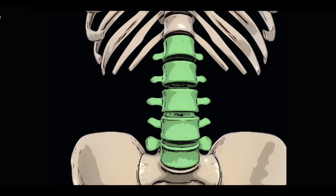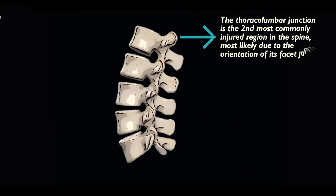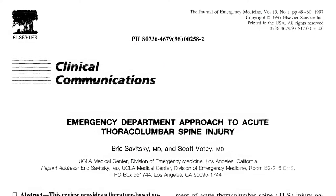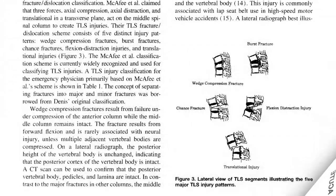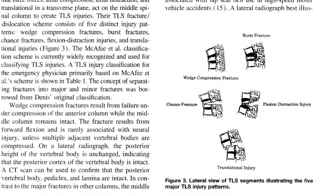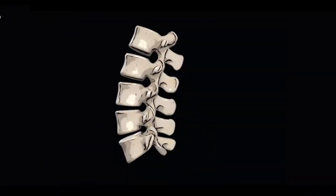The thoracolumbar junction is the second most commonly injured region in the spine, most likely due to the orientation of its facet joints, which may concentrate the forces created by a traumatic impact at this level. 90% of all thoracolumbar spine injuries occur in the region between T11 and L4. These injuries rarely result in complete cord lesions, as the spinal canal is relatively wide at this level.